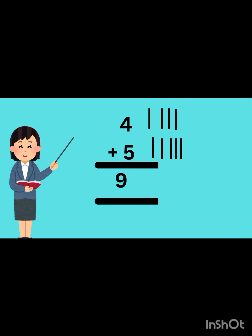I hope you friends have got it. One, two, three, four — four lines in front of four and five lines in front of five: six, seven, eight, nine. It is nine.